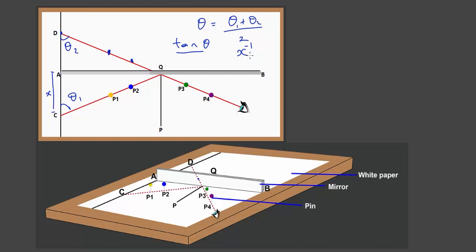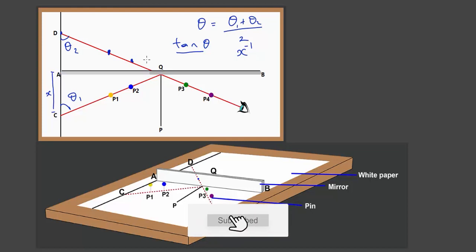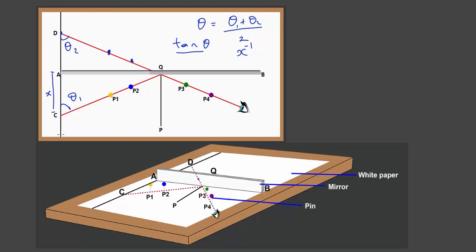The version you might see on the exam may be slightly different from this, but you'll be expected to measure some angles in combination with some distances — it could be distance AQ, AC, AB, QB, or similar. At the end of the day, you'll be expected to measure some distances and some angles.